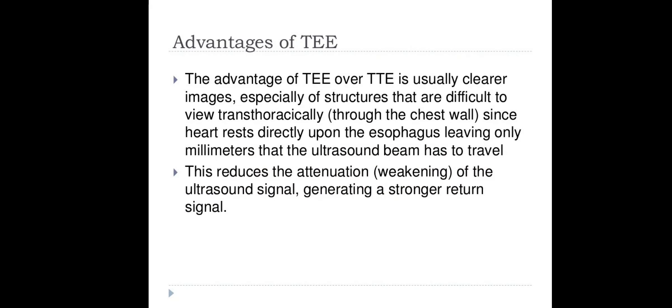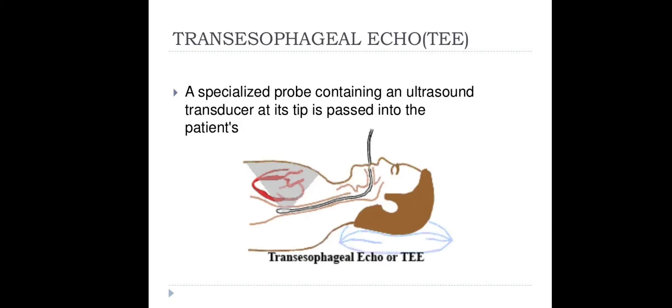Another type is Transesophageal Echocardiography (TEE). The esophagus is a tube-like cavity, and the probe is passed inside through the mouth and into the esophagus, getting very close to the heart. This is important when transthoracic echocardiography is difficult — for example, to detect things like myxoma or thrombus.